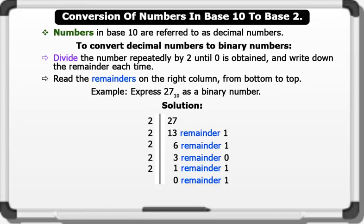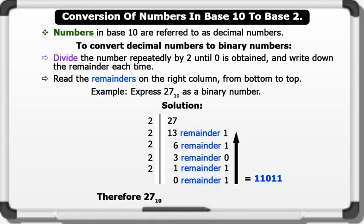Now let's write down the remainders starting from the bottom to the top: 1, 1, 0, 1, 1. Therefore, 27 in Base 10 equals 11011 in Base 2.